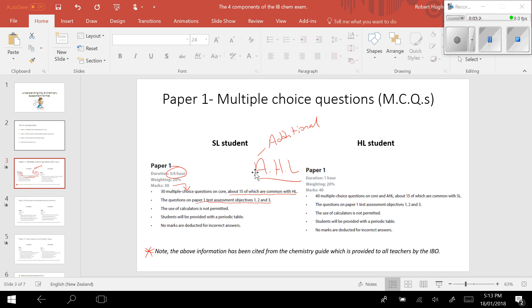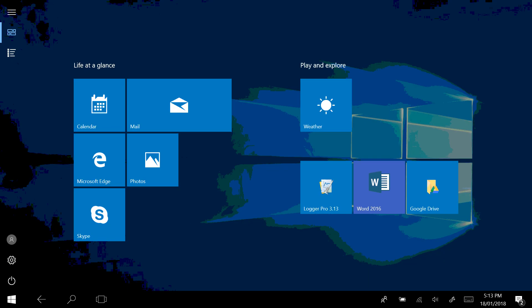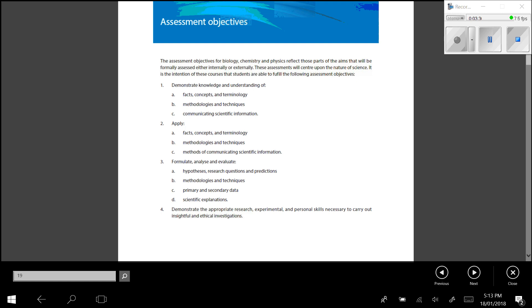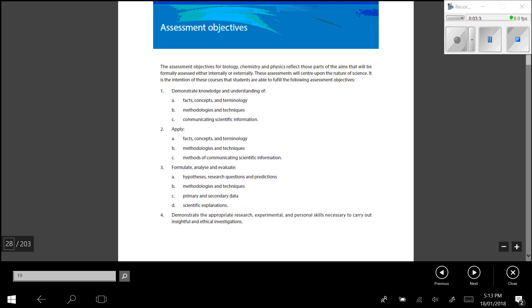So these assessment objectives here, again, this is from page 28 of the chemistry guide issued by the IBO. But effectively, the three main objectives that need to be assessed in papers one, two, and three have been ranked in terms of difficulty.